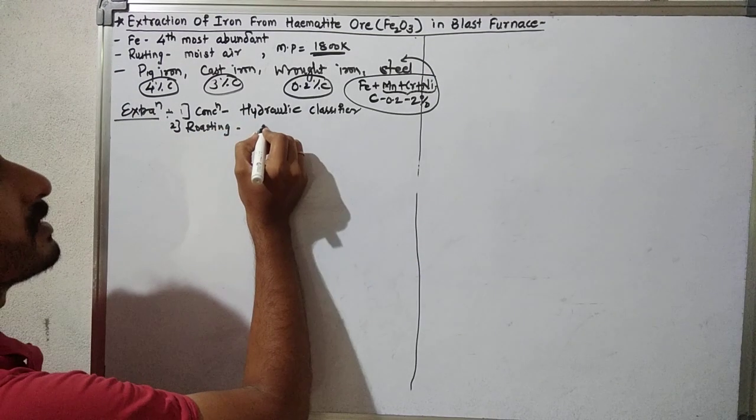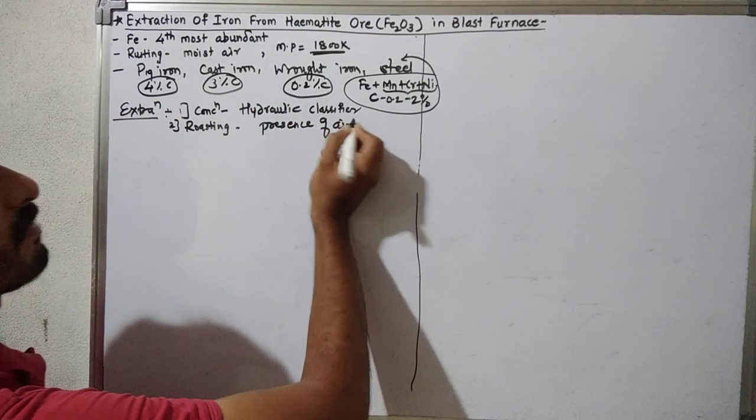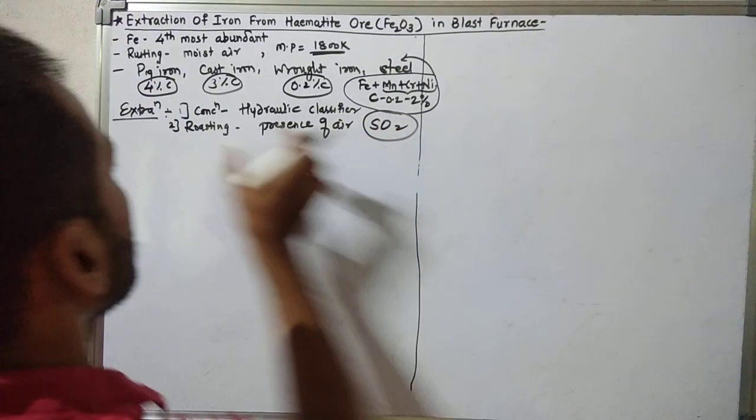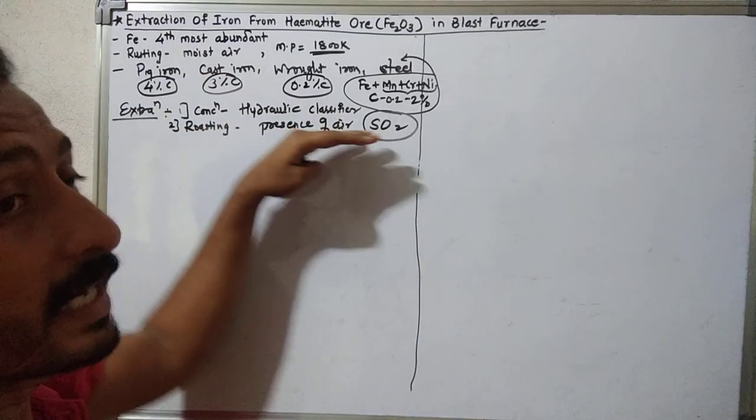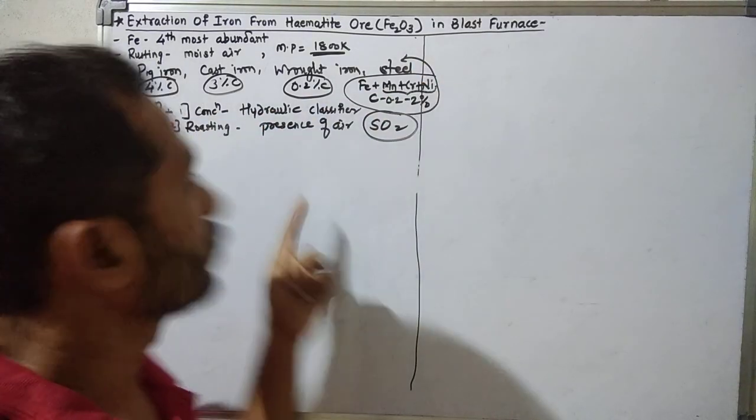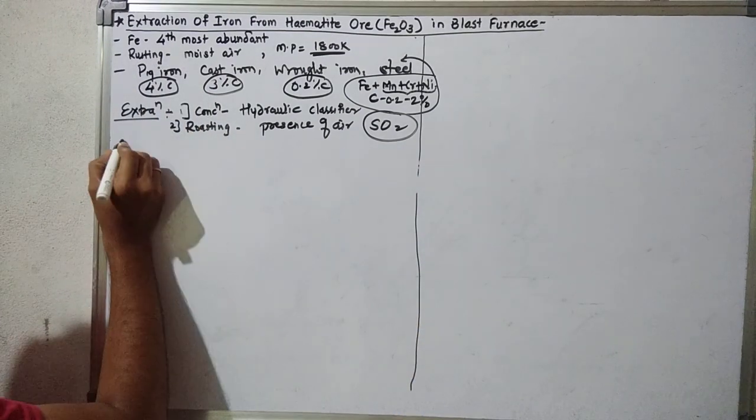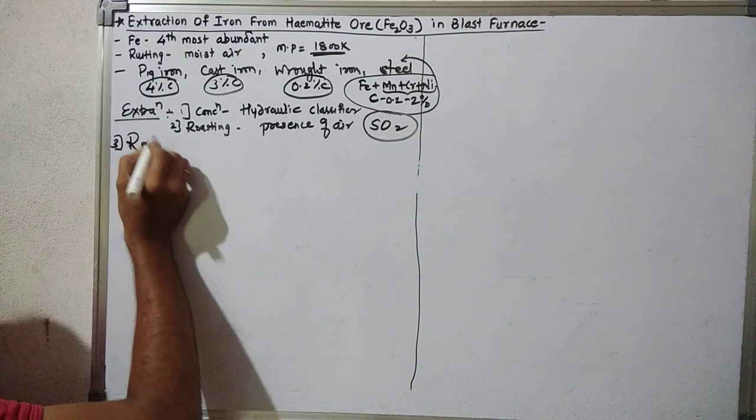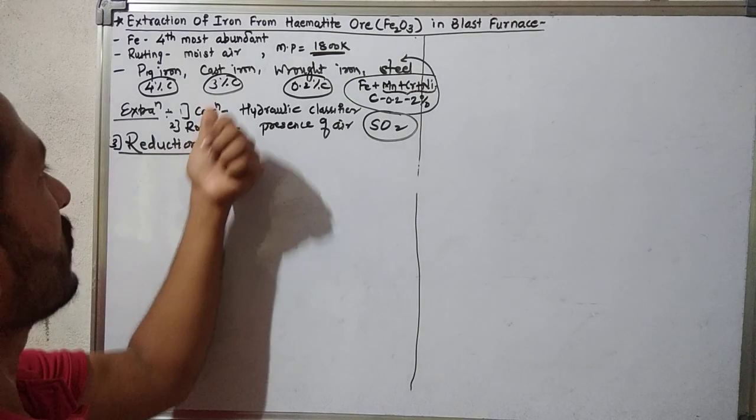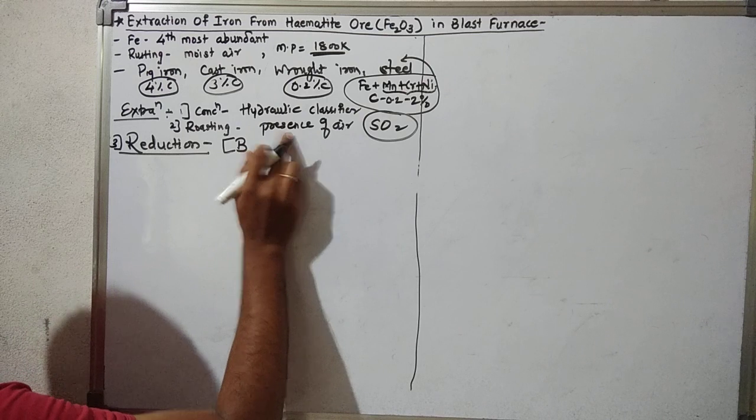In roasting, in the presence of excess air, sulfur dioxide and arsenic impurities are removed. Now after roasting of the hematite ore, after concentration and roasting, the roasted ore still has many oxide impurities. The third step is reduction. Remember, this reduction step is very important: first concentration, second roasting, and third one is reduction. This reduction of the roasted ore is carried out in the blast furnace.